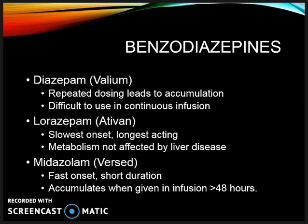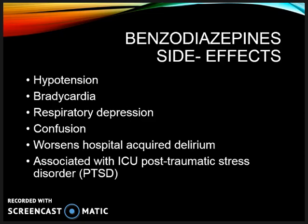Common types of benzos are Valium, Ativan, and Versed. Ativan has the slowest onset and is longest-acting, while Versed provides a quick onset. Accumulation can occur, and daily sedation vacations are important to ensure the patient is not on too high a dose. Benzos should be used cautiously, as they can cause hypotension and bradycardia, can worsen hospital-acquired delirium, and are associated with higher rates of ICU post-traumatic stress disorder.